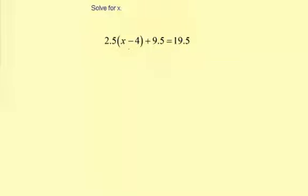Now the first thing I'm going to do is subtract 9.5 from both sides. So we have 2.5 times the quantity of x minus 4, and then equals, we have 9.5 minus 9.5, which is 0. And then we have 19.5 minus 9.5, which is 10.0.